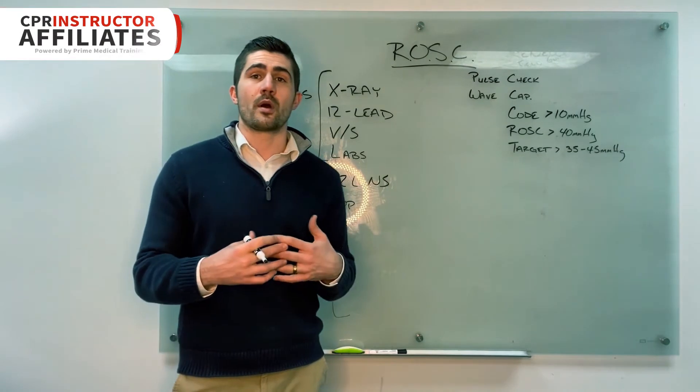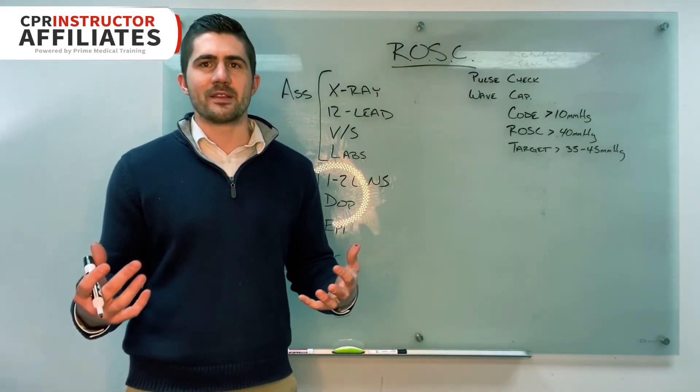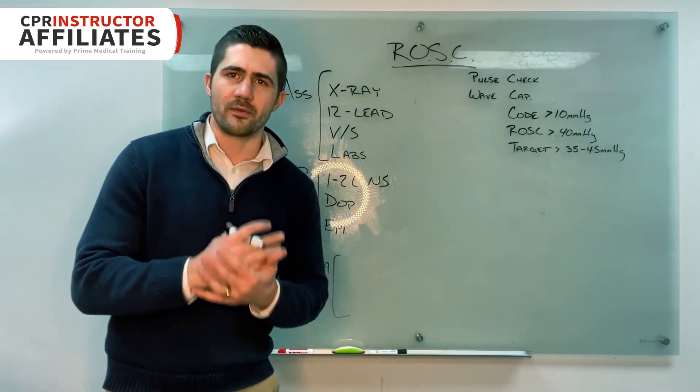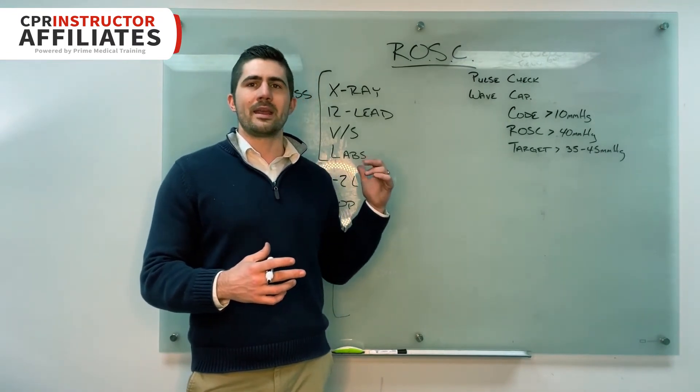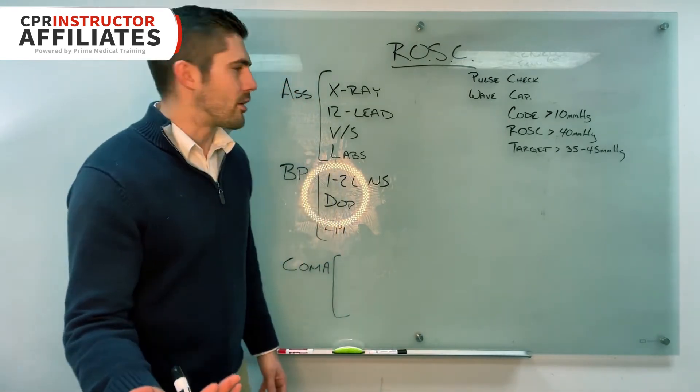And the reason is we just don't want to overburden the heart. It's been through a very traumatic experience. 90 is essential for making sure that we're still perfusing organs. However, any higher than that's going to be unnecessary at the time. And it's just going to put more of a strain on the heart.